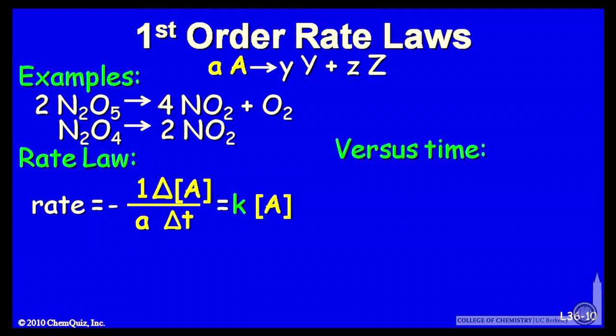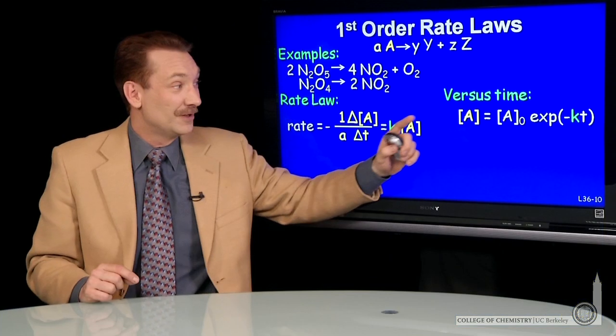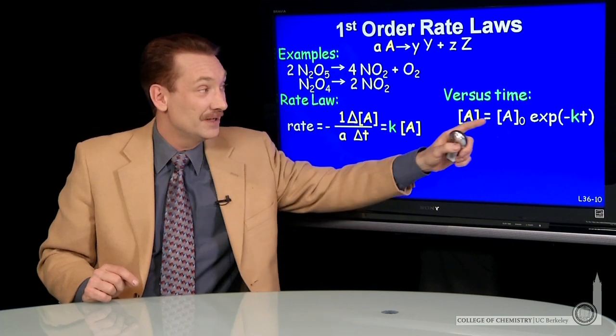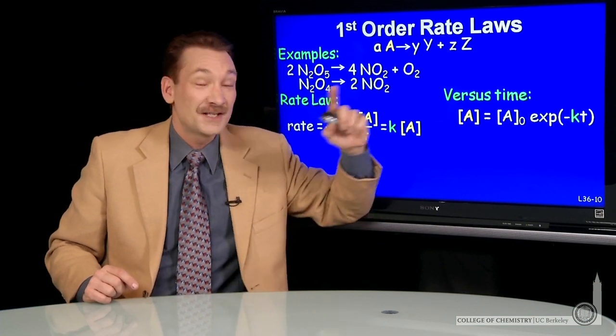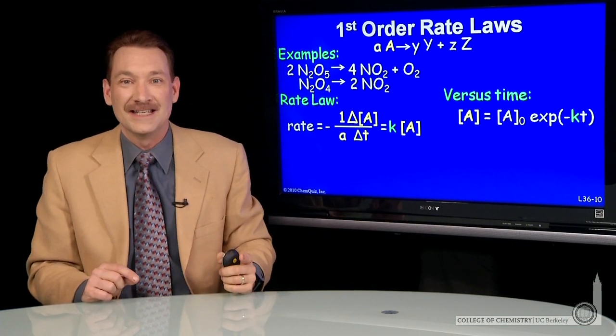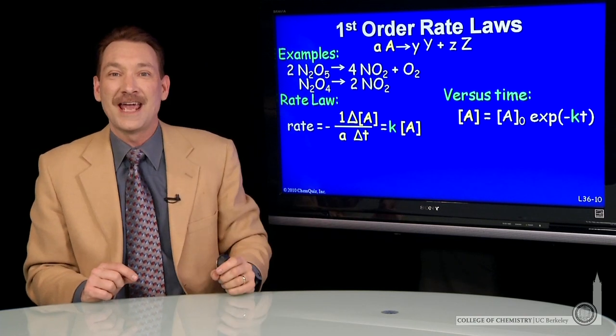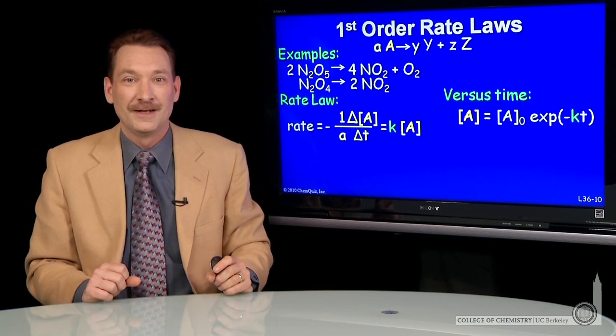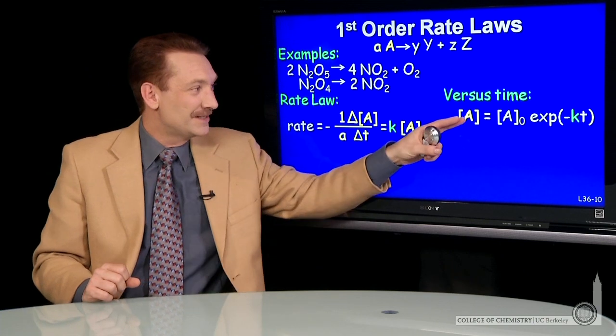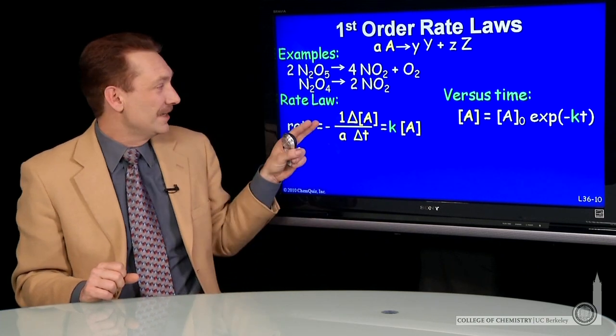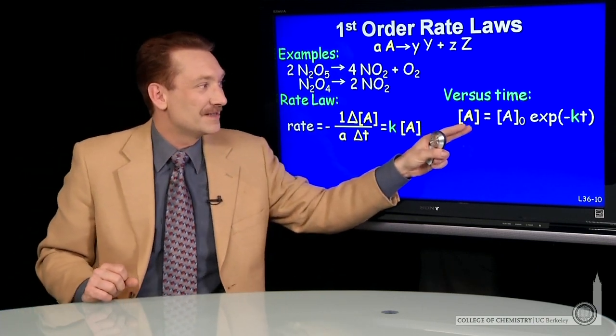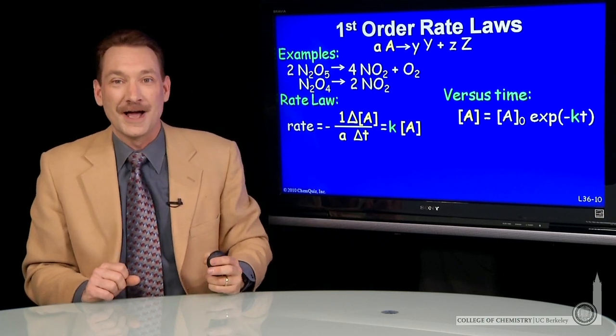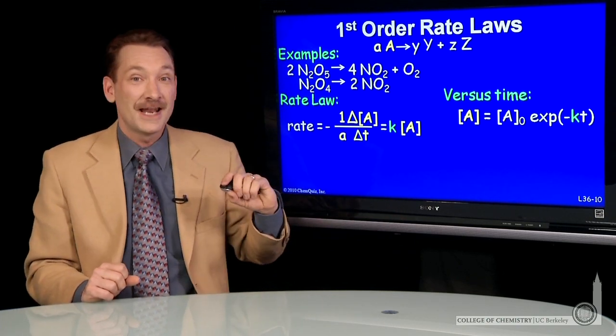I can also write these rate laws versus time. So A concentration goes as the initial concentration times the exponential of minus kT, e to the minus kT power. Both these first order rate laws in this differential form, in this form versus time, have first order kinetics.